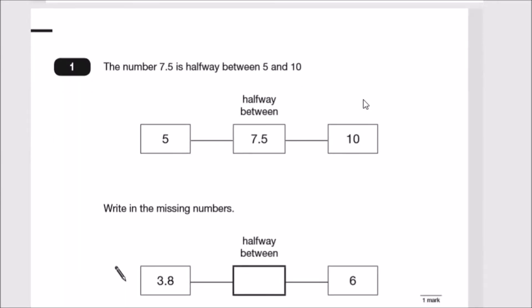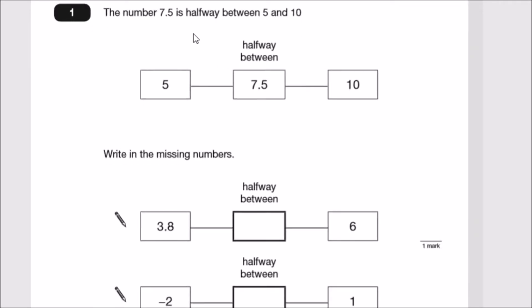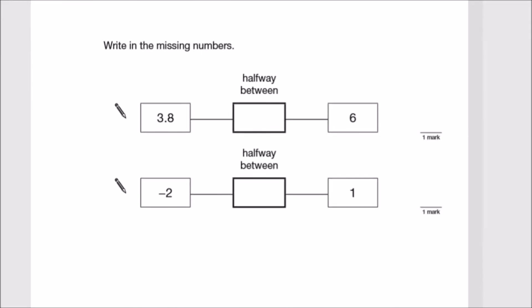Number one: The number 7.5 is halfway between 5 and 10. A quick way to calculate the middle halfway between two digits is to add the two numbers up, 5 and 10, and then half it to get a number in between. It's like finding the mean or average.